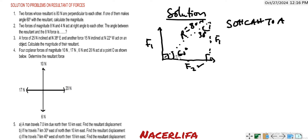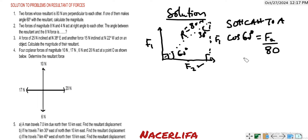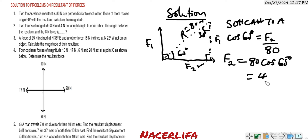Looking at this: the angle is 90 degrees, the hypotenuse is the resultant, and F2 is the adjacent side. Adjacent over hypotenuse is cosine. So cos 60° equals F2 over 8, giving F2 = 8 × cos 60° = 40 Newton.